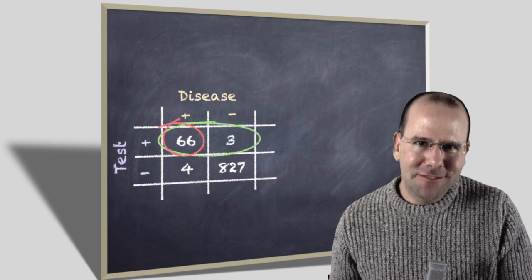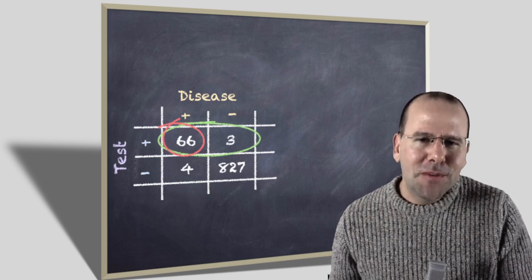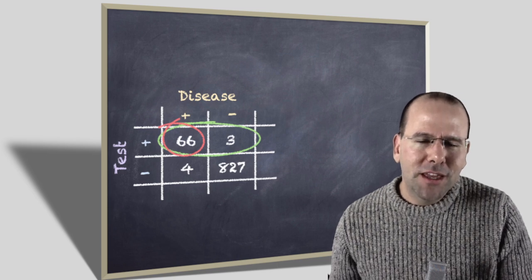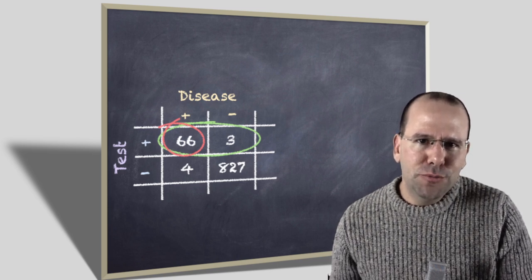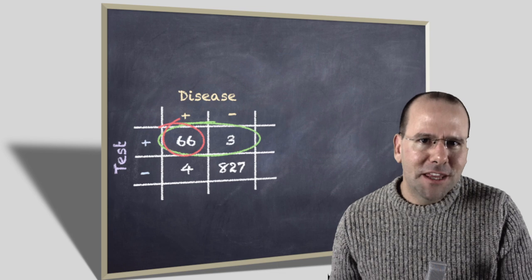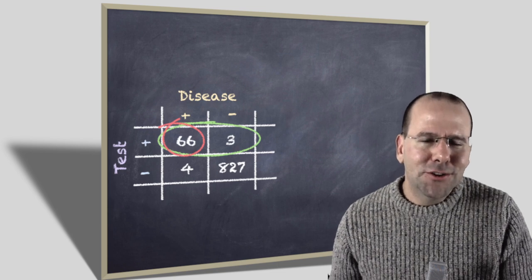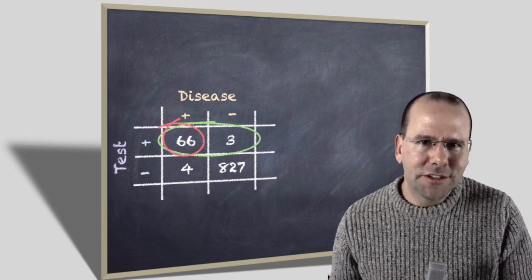Now this is not the case for positive and negative predictive values, because when we're looking at a positive or negative predictive value, the difference between the denominator and the numerator is affected by the prevalence of the disease in the community. And so it's not simply a function of the characteristic of the test itself.